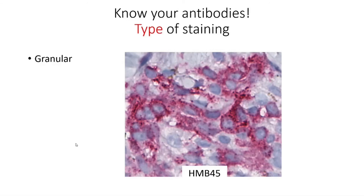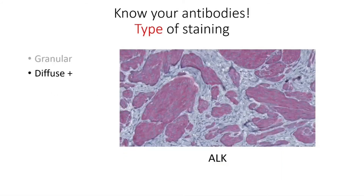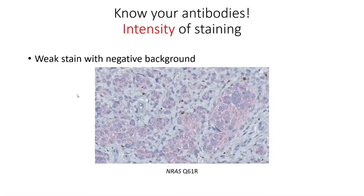You also have to know the type of staining. For example, for HMB45, you're going to expect a very granular type of stain. Otherwise, it can be a diffuse positivity, for example here for ALK in this plexiform Spitz. In some cases you will have a weak intensity but a completely negative background — this is usually what you will have for NRAS Q61R. You don't need more staining than this to call the case positive.